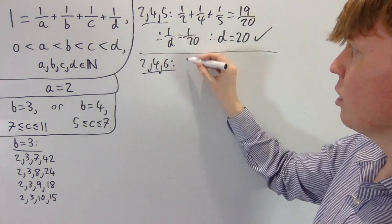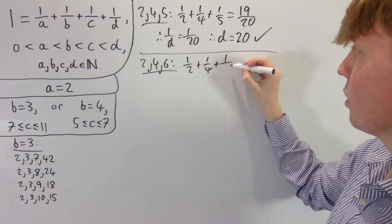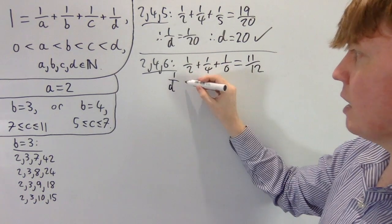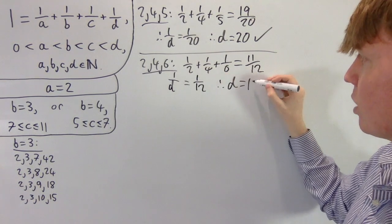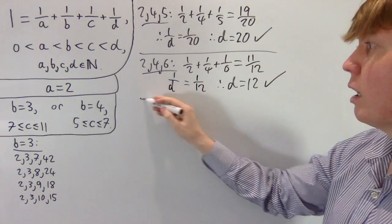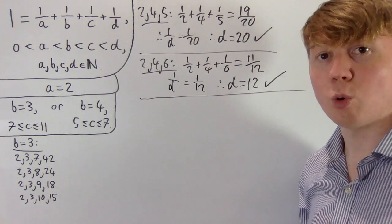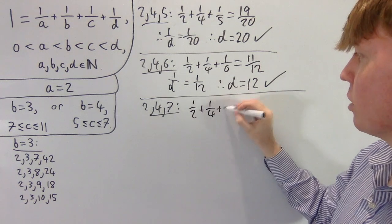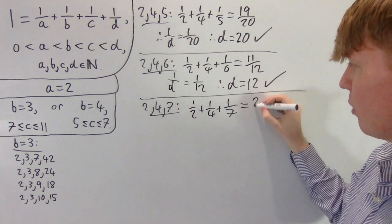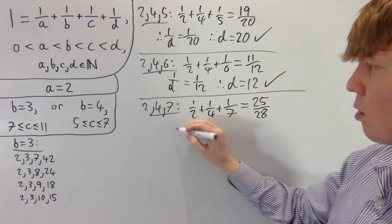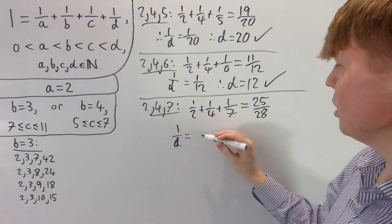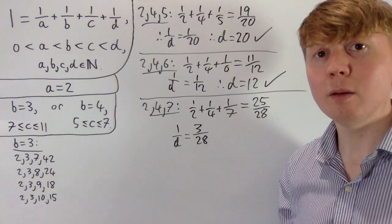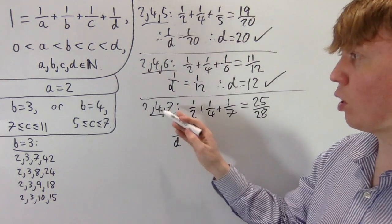Let's try (2, 4, 6): one half plus one quarter plus one sixth equals 11 over 12. So one over d equals one twelfth, giving d equals 12. So (2, 4, 6, 12) is another solution. Finally, let's check (2, 4, 7): one half plus one quarter plus one seventh gives 25 over 28. So one over d would need to be 3 over 28, meaning d equals 28 over 3 — not an integer. So (2, 4, 7) doesn't work.